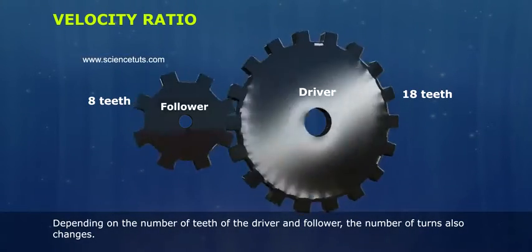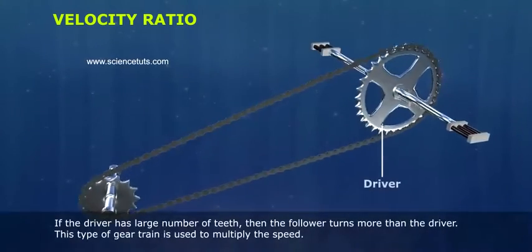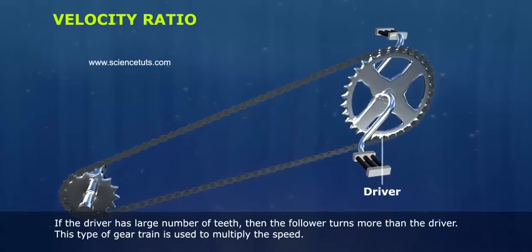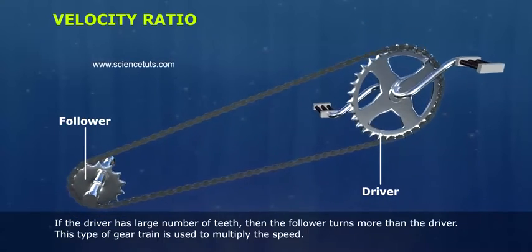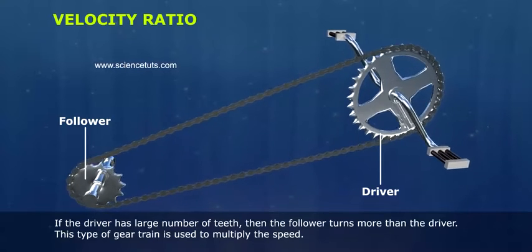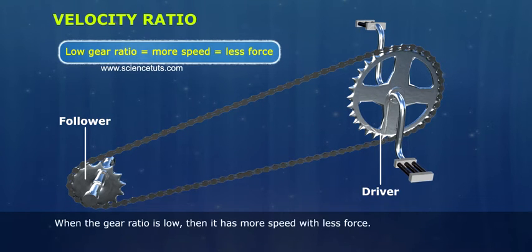If the driver has large number of teeth, then the follower turns more than the driver. This type of gear train is used to multiply the speed.